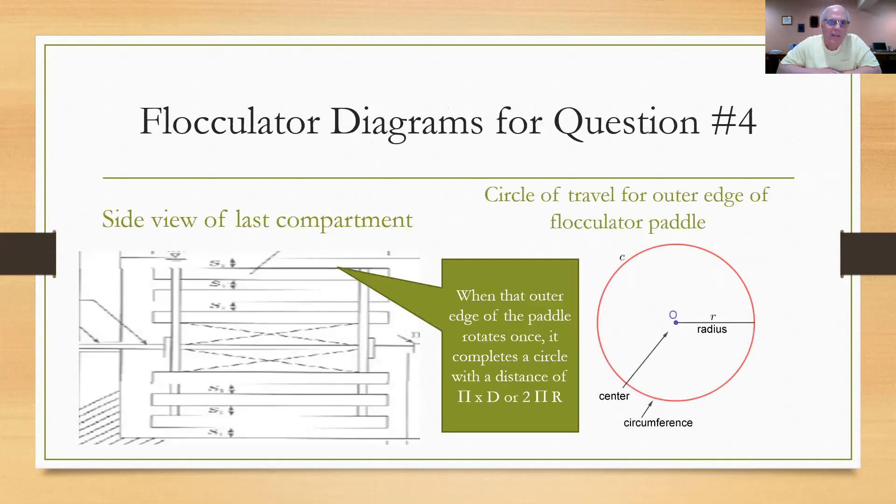On the left of this slide, you see the side view of the last compartment. You see a shaft coming down through the middle. On the left of it, two sets of paddles, three blades each. Where the green arrow goes, you see the outside edge of that paddle rotates once. When it goes around one time, it's supposed to cut out a circle that would have a distance of pi times d or two pi r. You look on the right hand side, you see what I'm saying. If that shaft in the middle is coming towards you, then that red circle that goes around is the cutout part of that paddle, outside diameter of that paddle going around one time.